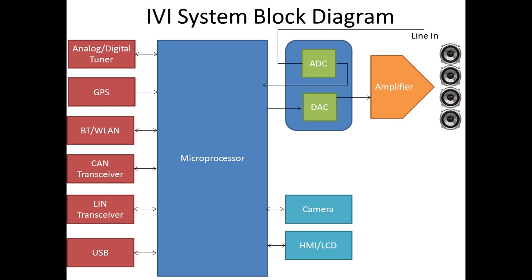In the block diagram, at the center we have the microprocessor, which interacts with other modules for their respective functionality. The first module is the analog/digital tuner chipset, which provides tuner functionality to the infotainment system. It can have two kinds of tuners: analog — meaning FM and AM reception — and digital tuners such as SDARS or DAB.